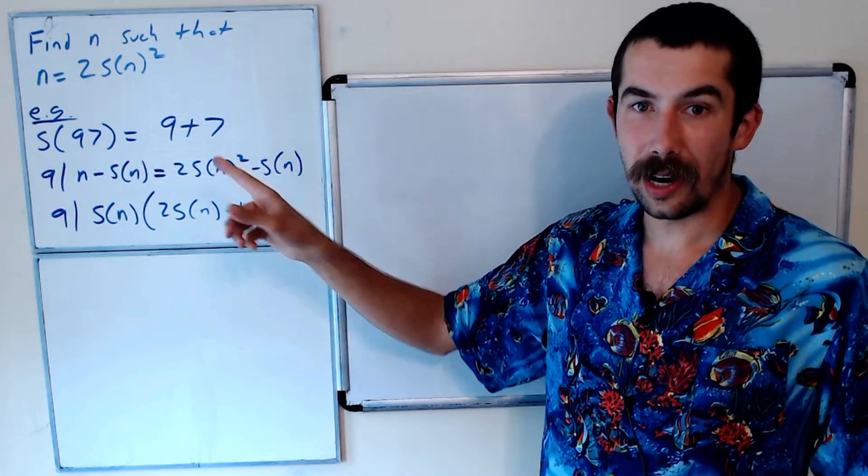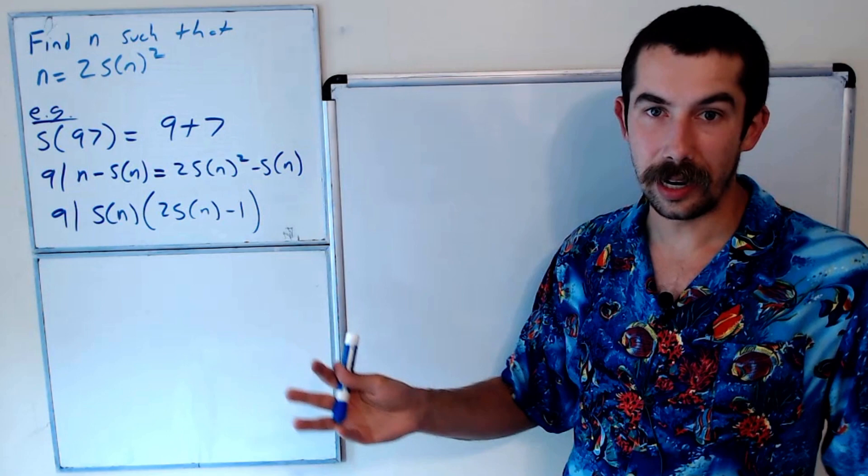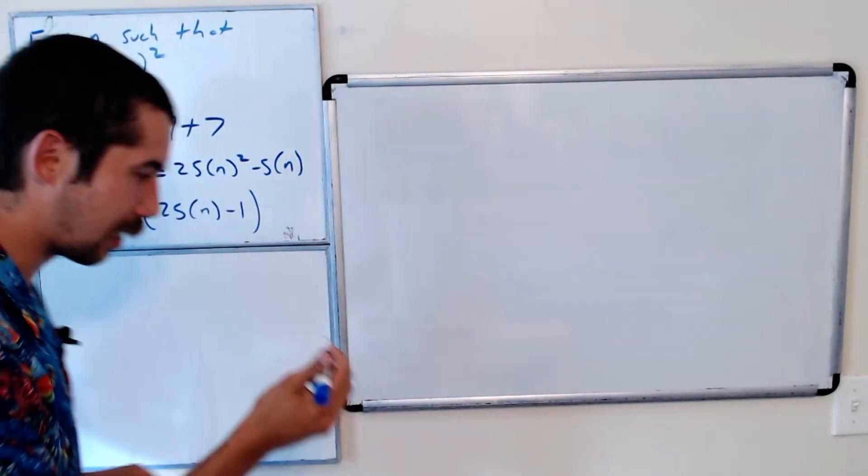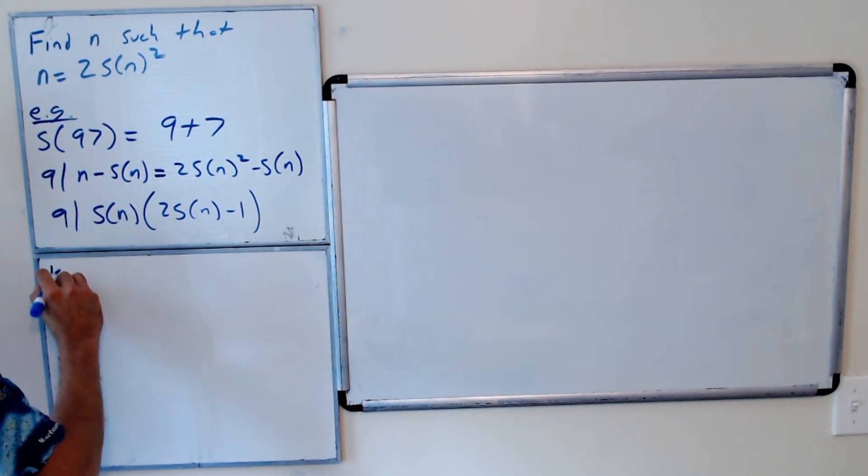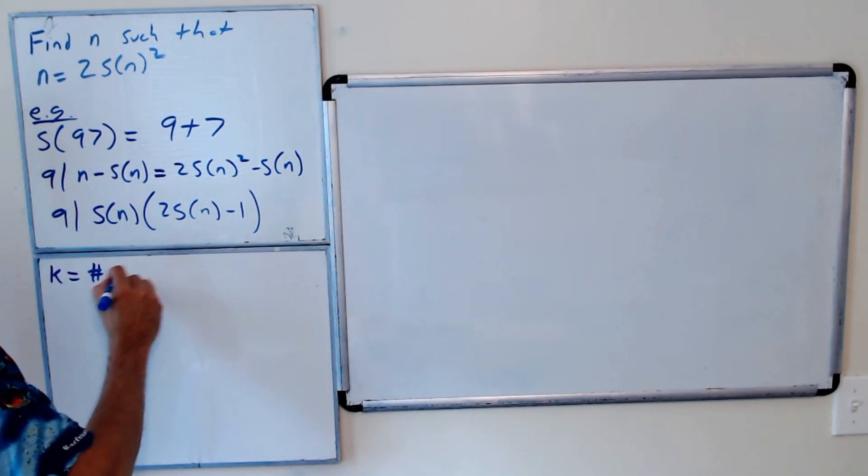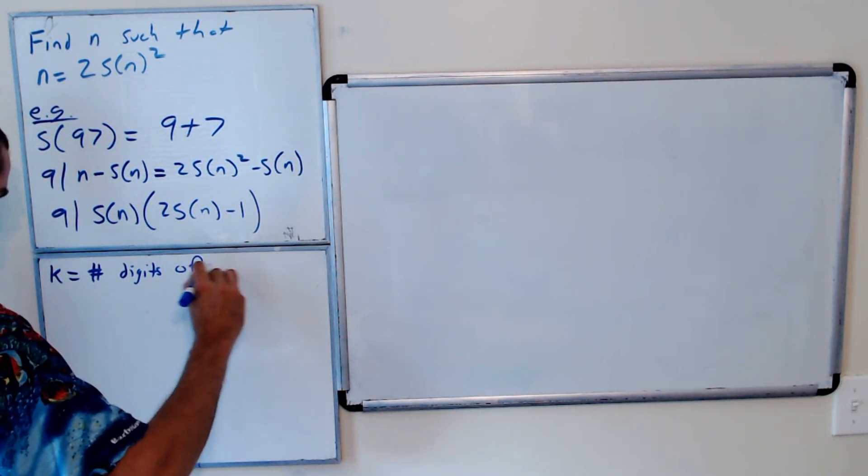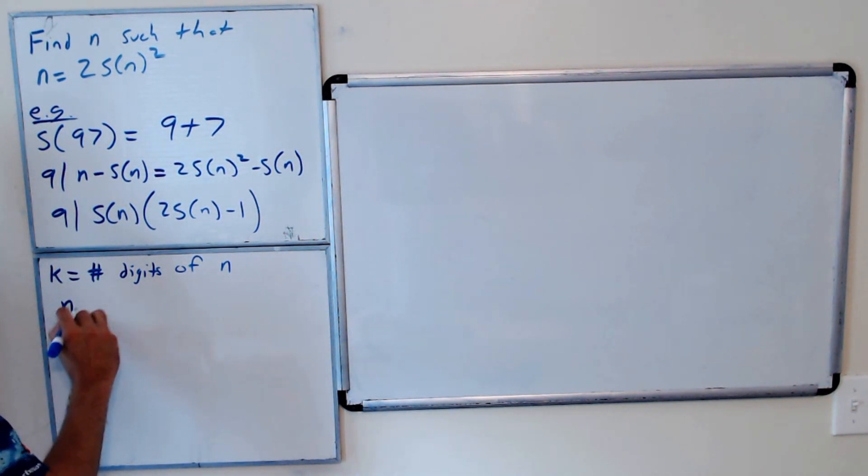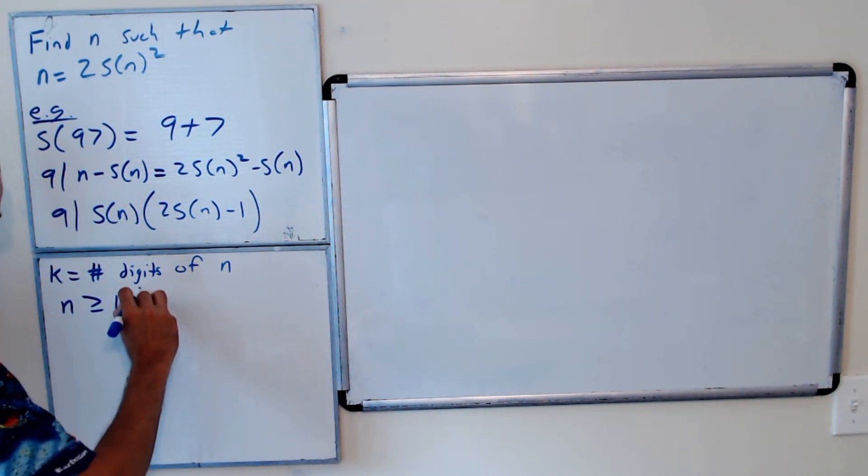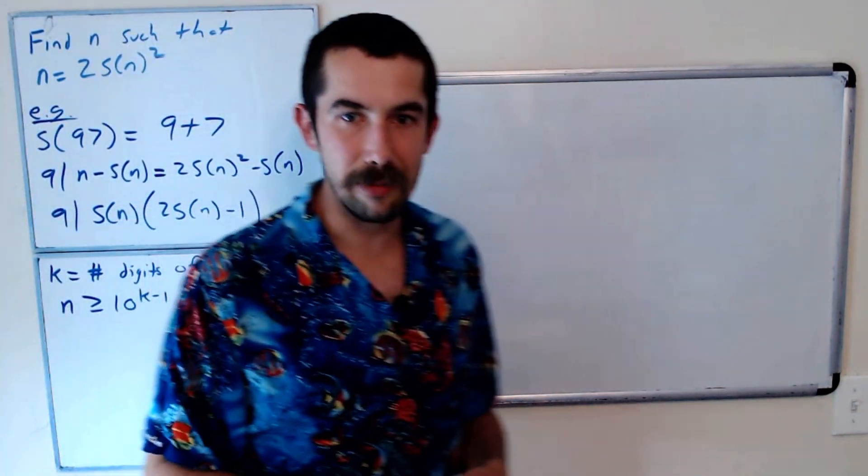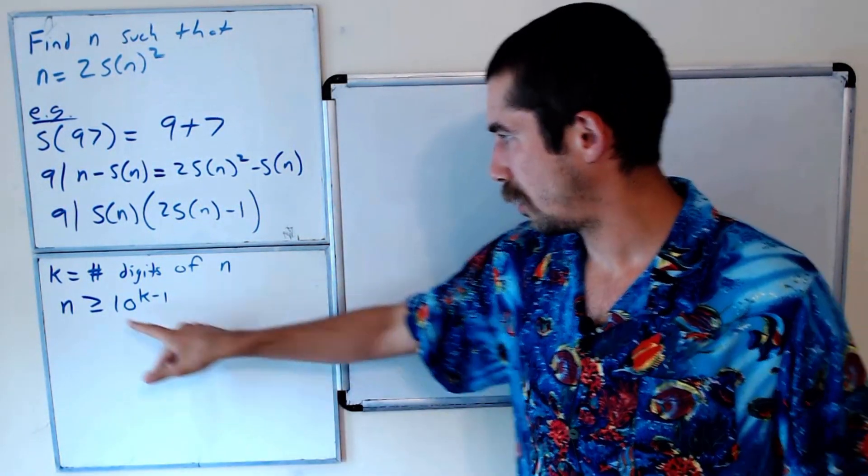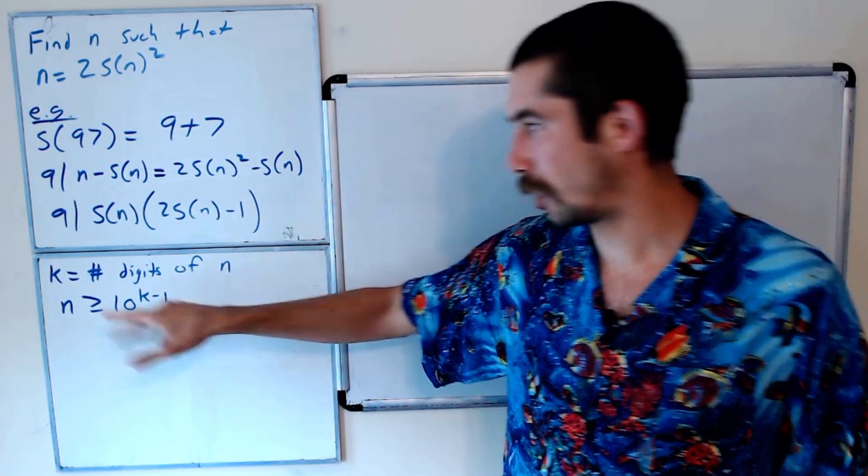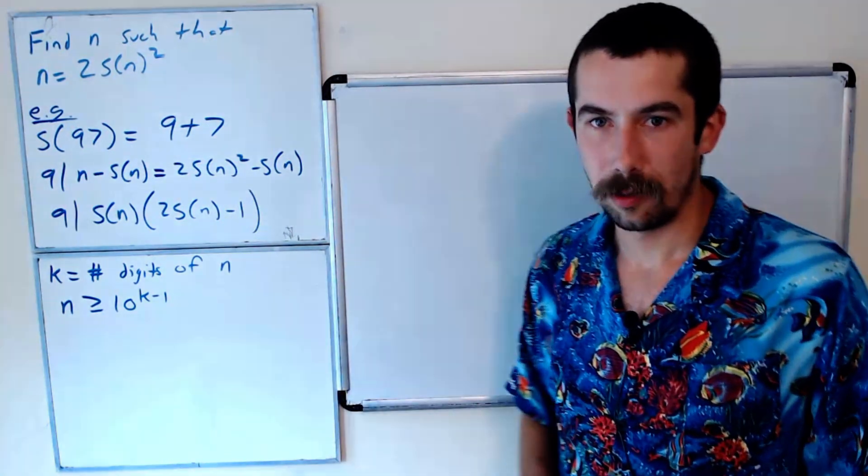Now let's put a limit on how big n could be because we don't want to be checking infinitely many numbers. That would take a long time. So let's let k equal the number of digits of n. This means that n is greater than or equal to 10 to the k minus 1. If n was a five-digit number, then it's greater than or equal to 10,000. We could also put an upper bound on n, but we don't need that.